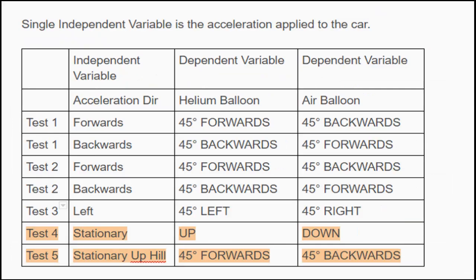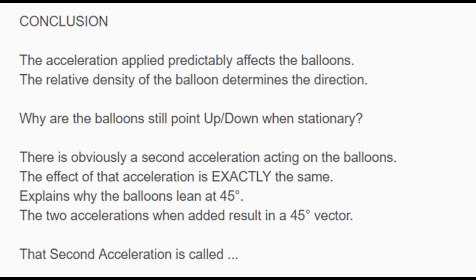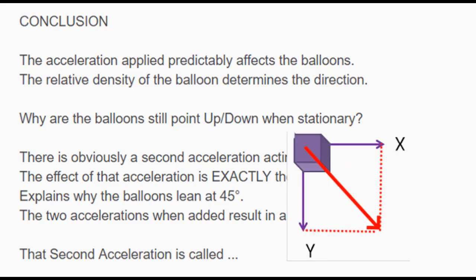But wait — what's happening with the other tests? The one where it's stationary: how come both balloons are pointing up and down? And even when we parked the car up a hill, it's a bit of a thought experiment, but you can see they're going to be pointing straight up and down. What's going on? Why are the balloons pointing at 45 degrees and not straight out to the side? Well, that's because there's actually a second acceleration present, and that acceleration is called gravity.